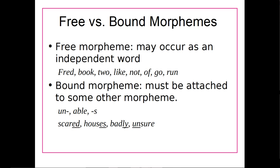Bound morphemes are morphemes that have to be attached to another morpheme — they can't just occur on their own. Examples of this would be the un and the able in unbelievable, or the S that we add to the end of plural nouns or verbs to indicate tense. The past tense -ed in scared, the plural -s in houses, the adverb -ly in badly, or the negative un- in unsure are all bound morphemes because they need to be attached to another morpheme.